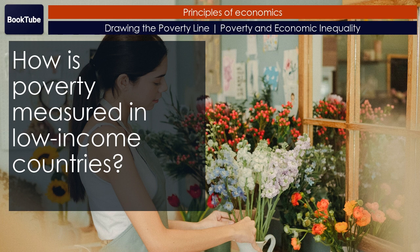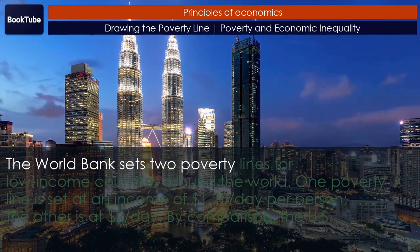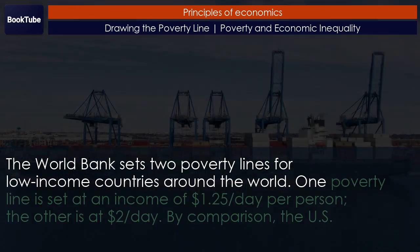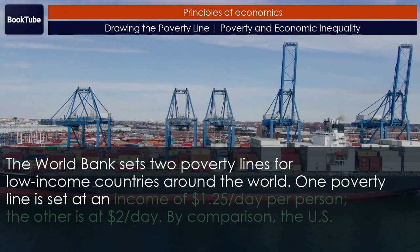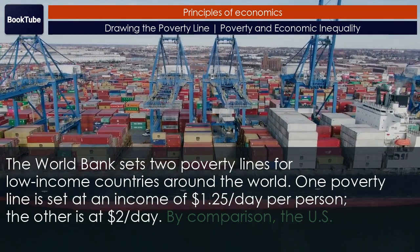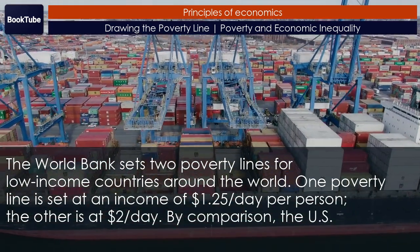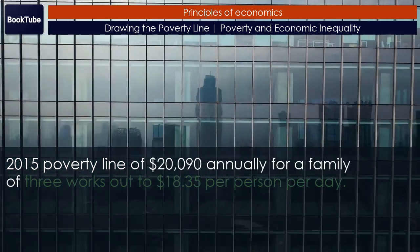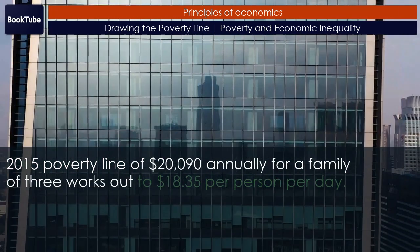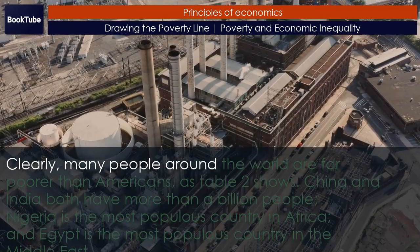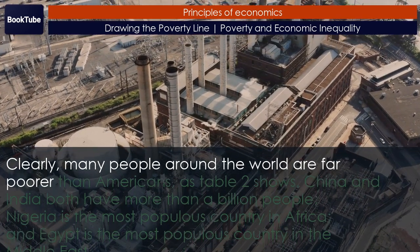How is poverty measured in low-income countries? The World Bank sets two poverty lines for low-income countries around the world. One poverty line is set at an income of $1.25 per day per person, and the other is at $2 per day. By comparison, the U.S. 2015 poverty line of $20,090 annually for a family of three works out to $18.35 per person per day. Clearly, many people around the world are far poorer than Americans.